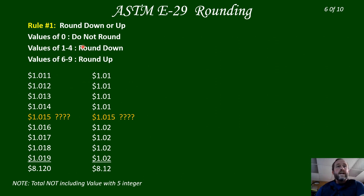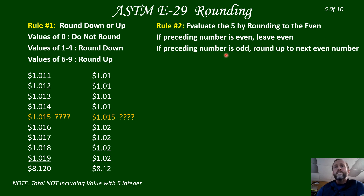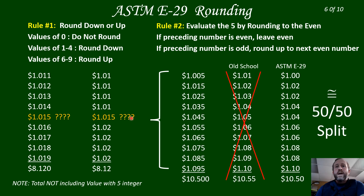Rule one: similar to before, values one to four round down, but now we skip the five for a moment — values six to nine you round up. So one to four rounds down, six to nine rounds up, and we have a 50-50 split with those. Our totals are the same: eight dollars twelve cents each — it looks good. But what do we do with the five? Old-school method: everyone's rounded up.